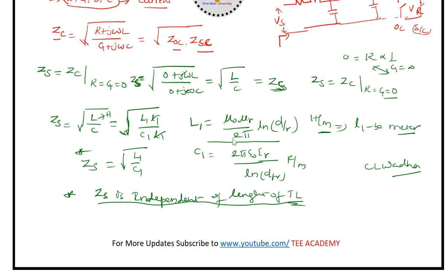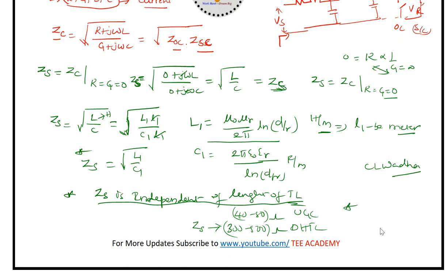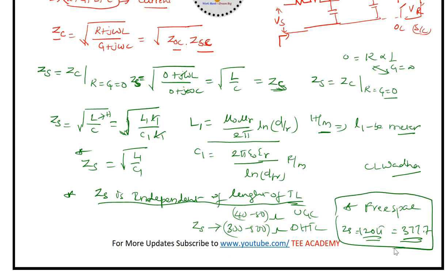Substituting values of μ₀, μᵣ, and related constants, the surge impedance Zs is 300 to 500 ohms for an overhead transmission line, and 40 to 50 ohms for underground cables. For free space, Zs = 120π ≈ 377 ohms. These values are very important for examination purposes, especially for TNEB exams, as they connect with signal systems.